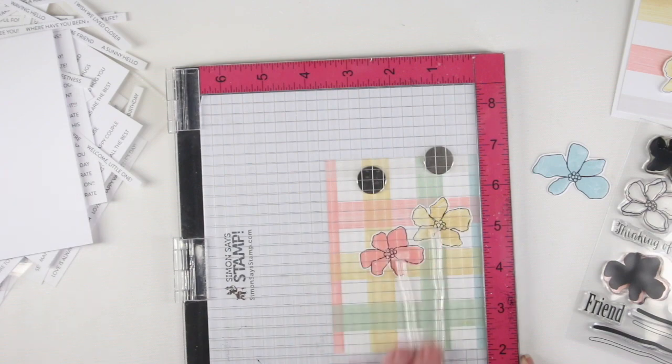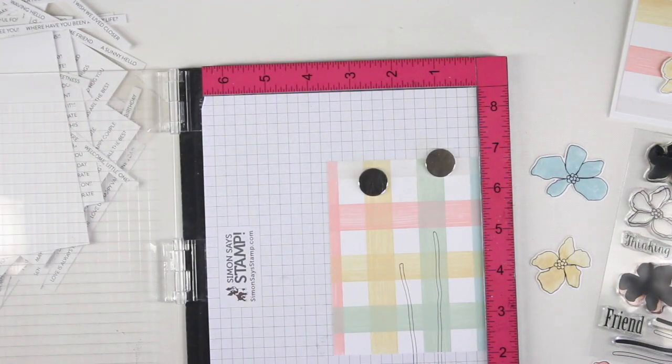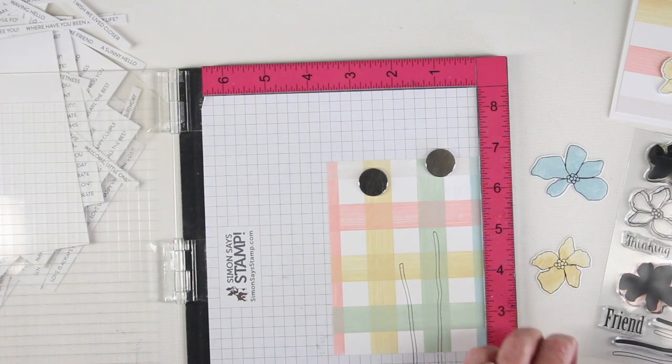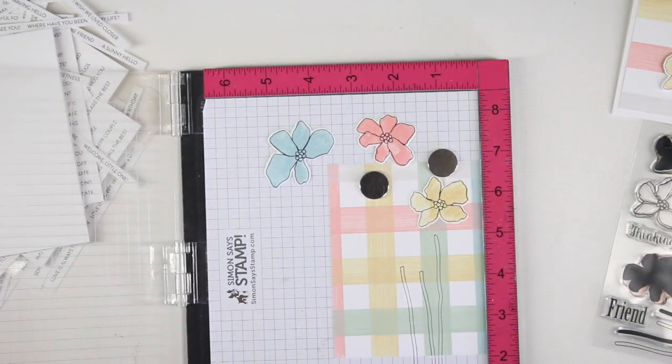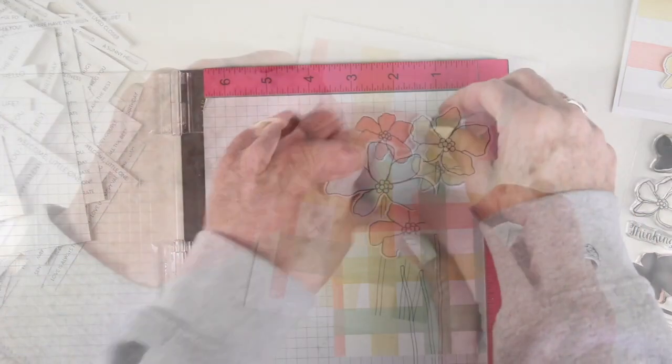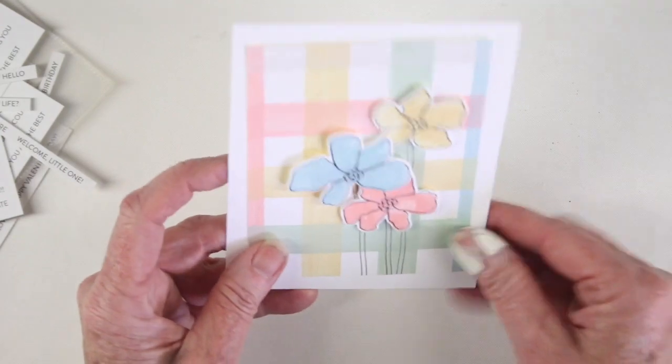Before I adhere these flowers down I want to add some stems, so I have just placed those stems onto the MISTI window, inked them with black ink, and now I have a couple fine stems. I'm also using my flower as a guide to stamp my third stem.